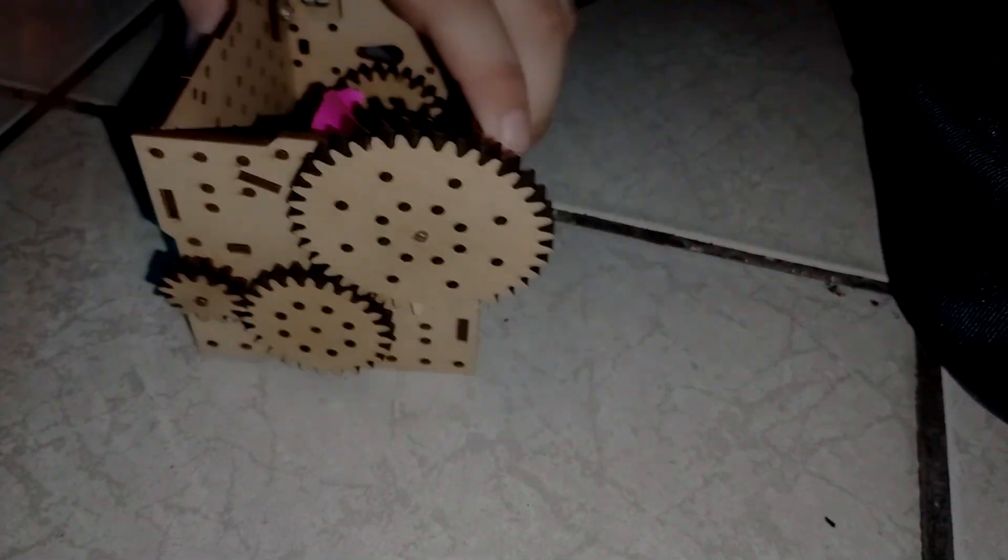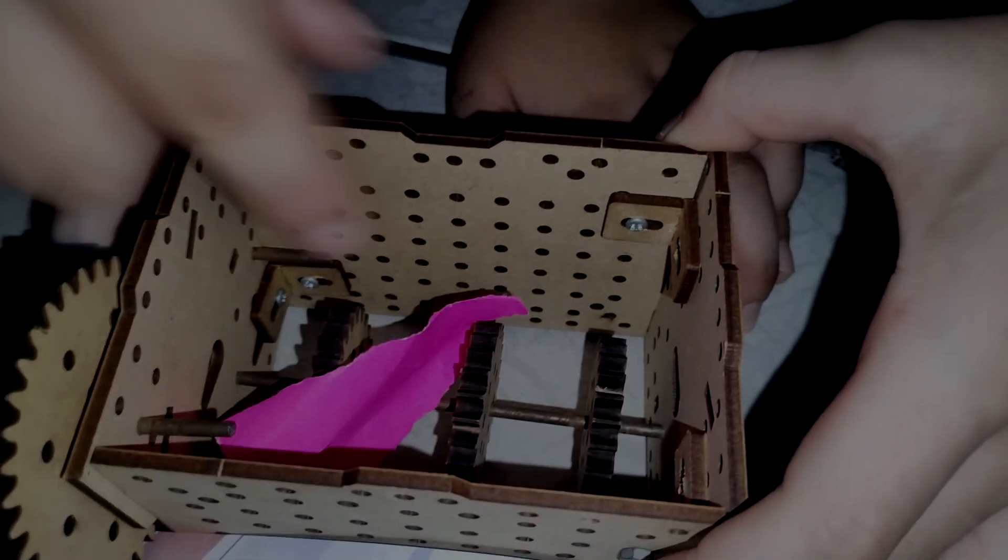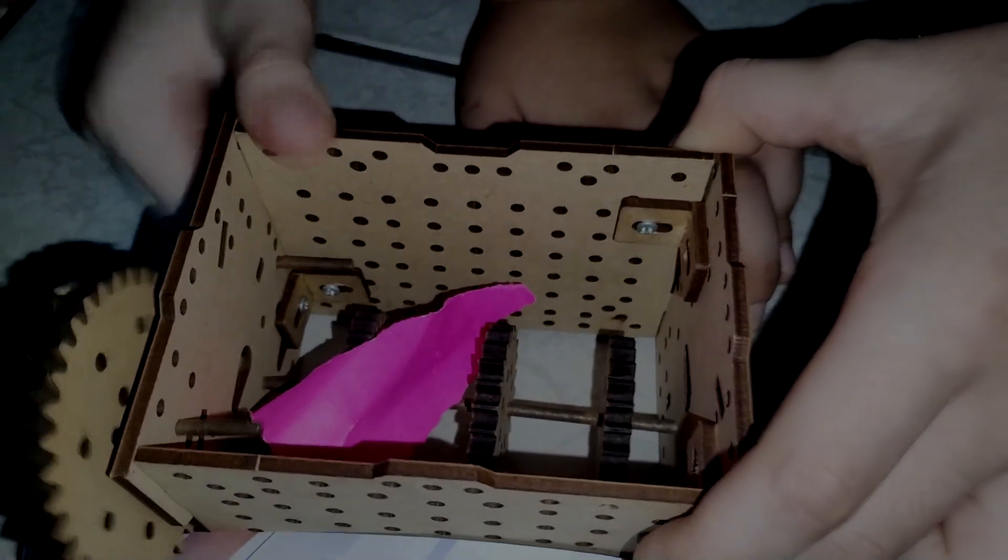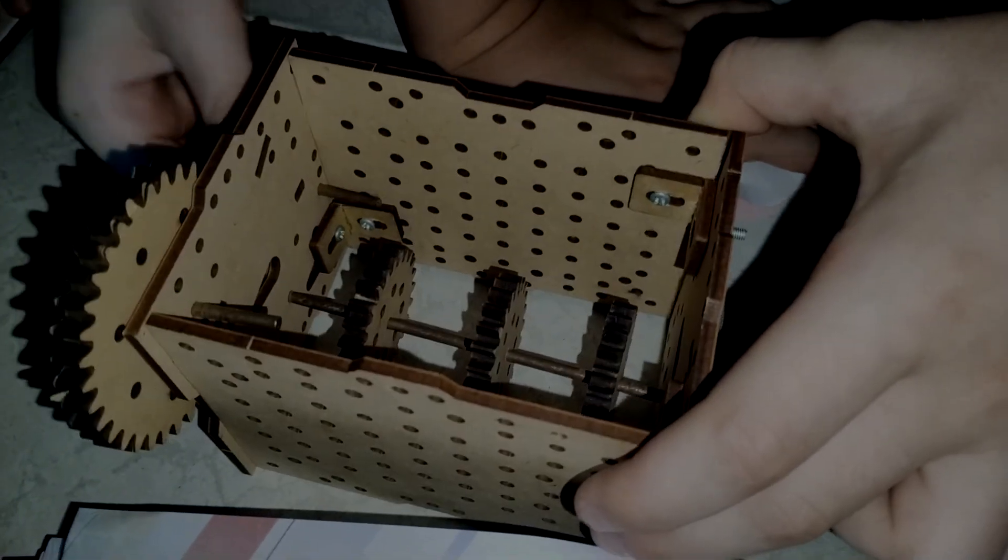Pero el engranaje loco no aumenta la relación de transmisión. Es decir, no va a alterar la velocidad ni el torque; solamente va a cambiar el giro de salida, el giro del engranaje grande, de la corona.